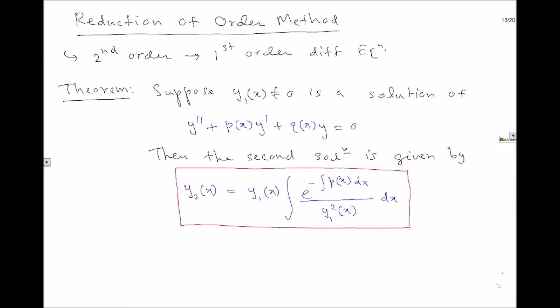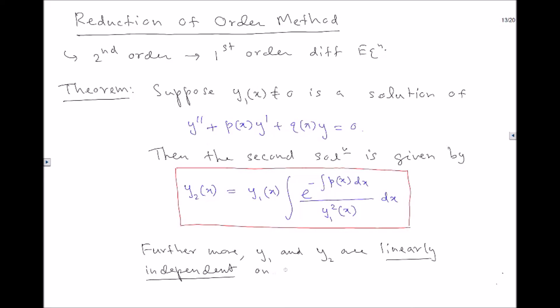Furthermore, y₁ and y₂ are linearly independent on any interval where y₁ is not equal to 0. So if y₁ ≠ 0, then those two solutions are automatically linearly independent. This is what we call the reduction of order formula.